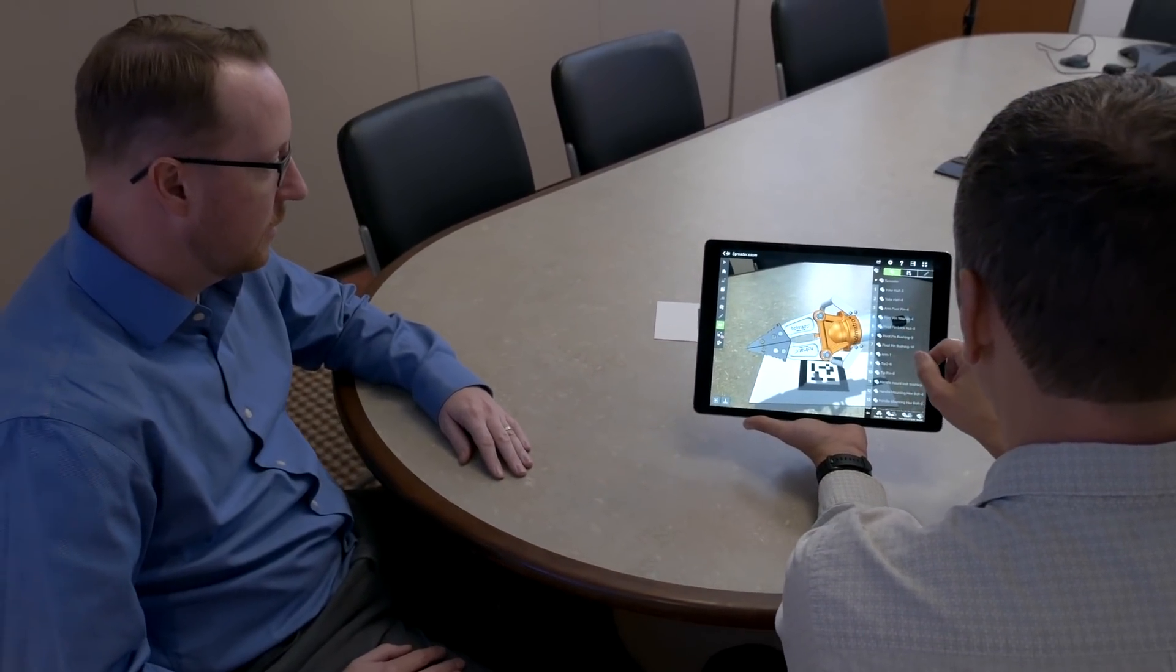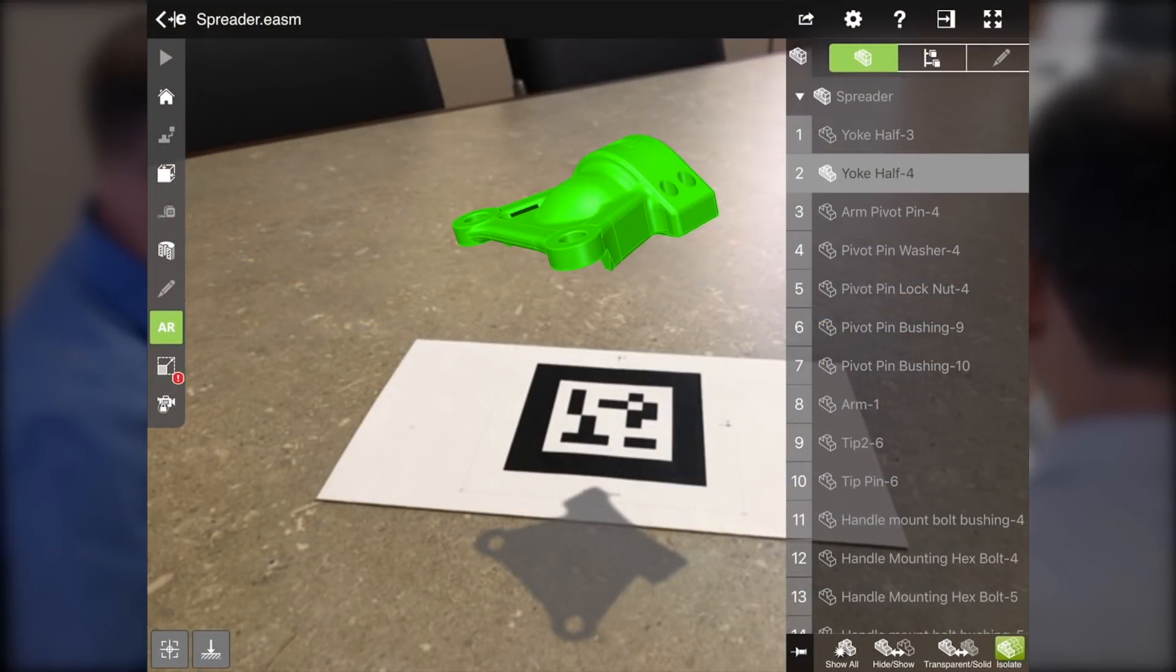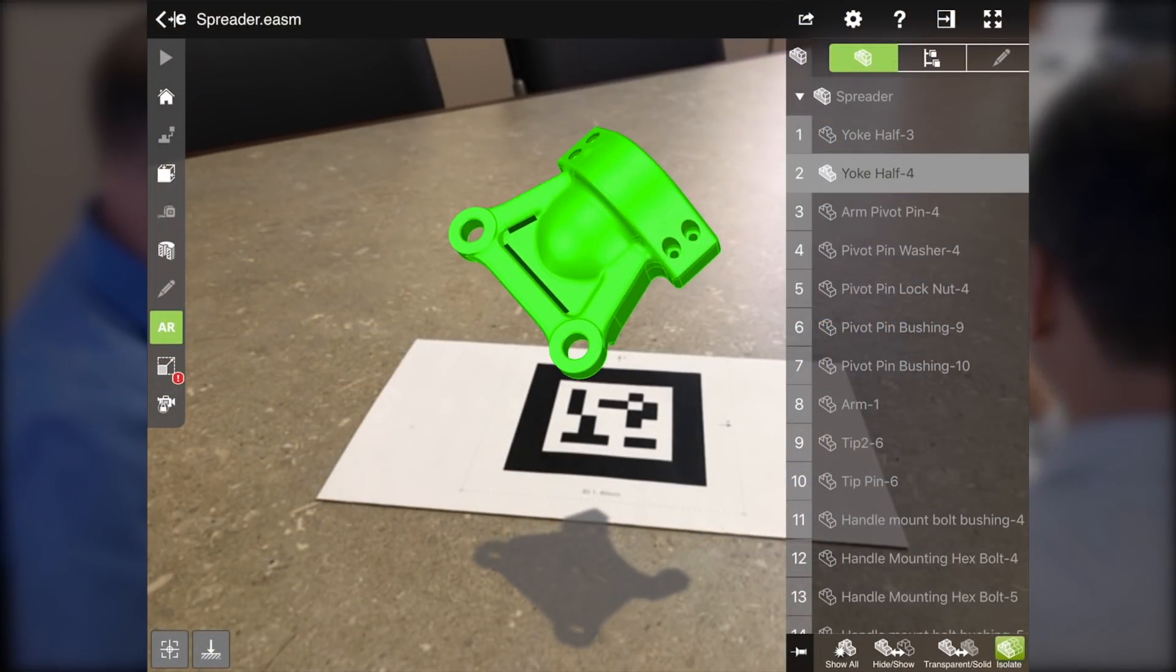Hoops Visualize also enables native application development on both iOS and Android with integrations with ARKit for iOS and ARCore for Android. Hoops Visualize can help you build new augmented reality experiences that seamlessly blend the digital and physical world on mobile devices.